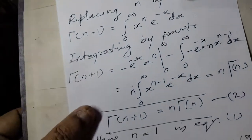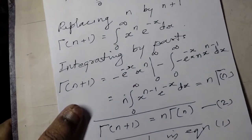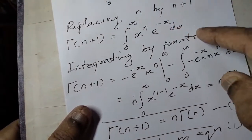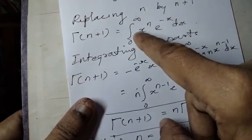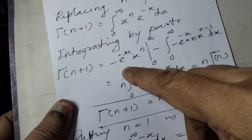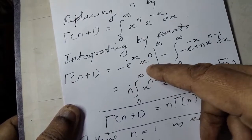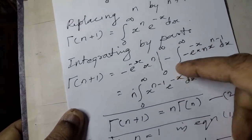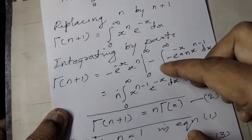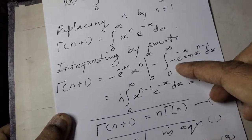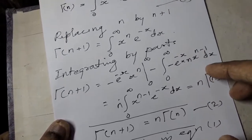Using integration by parts — integral of u dv equals u·v minus integral of v·du — where dv is e raised to minus x dx, we integrate both terms. Gamma of n plus 1 equals minus e raised to minus x times x raised to n, evaluated from 0 to infinity, minus the integral from 0 to infinity of minus e raised to minus x times n·x raised to n minus 1, dx.